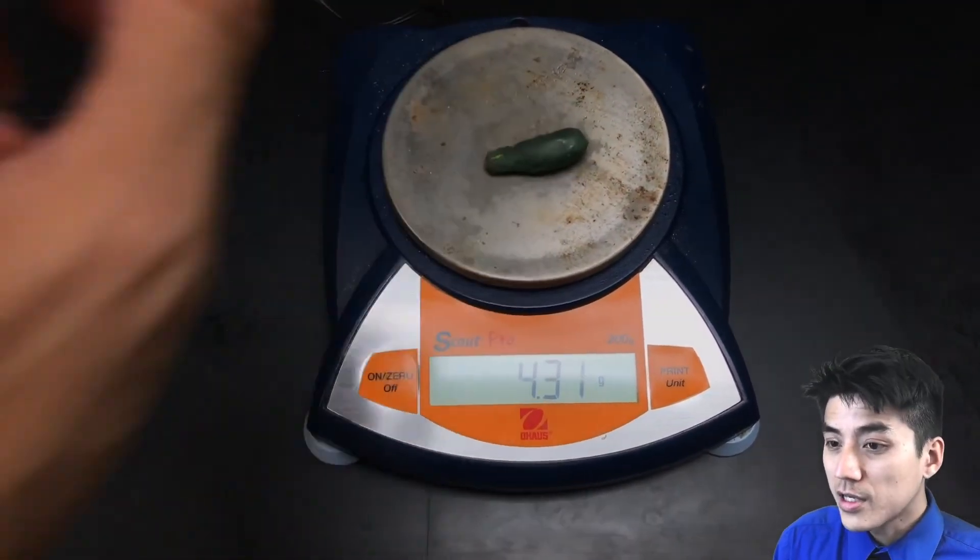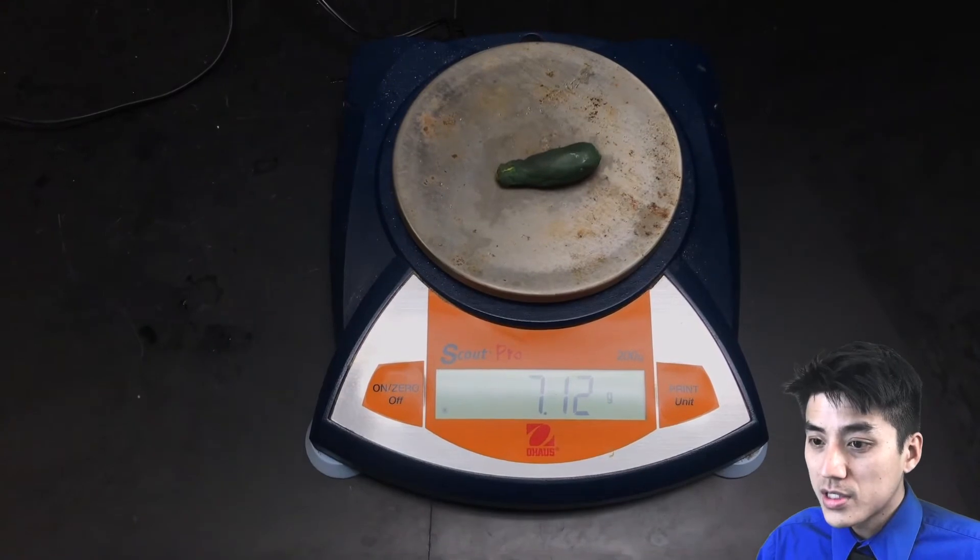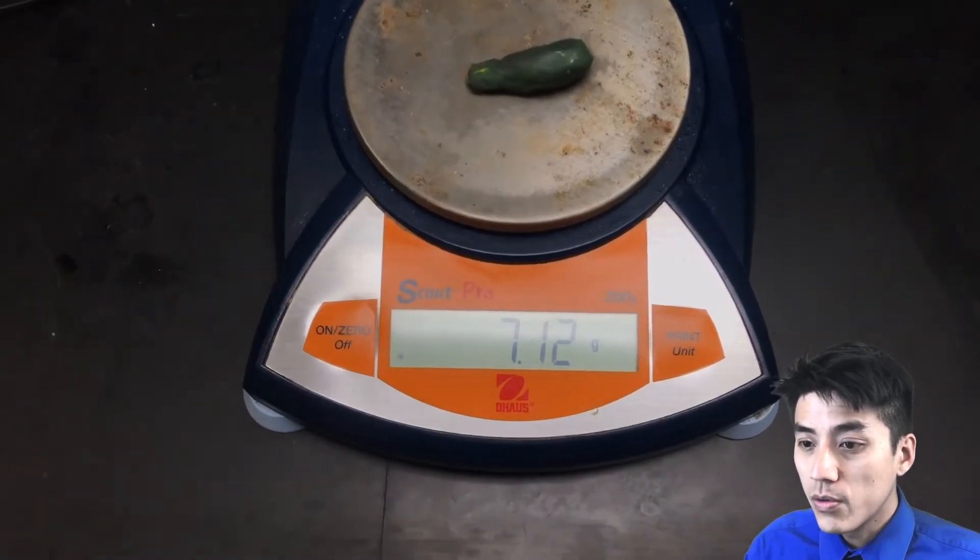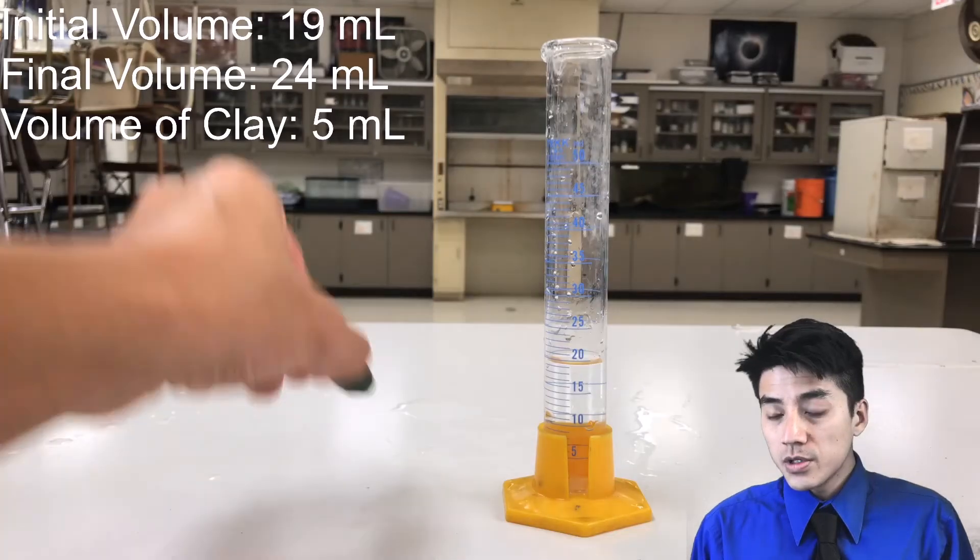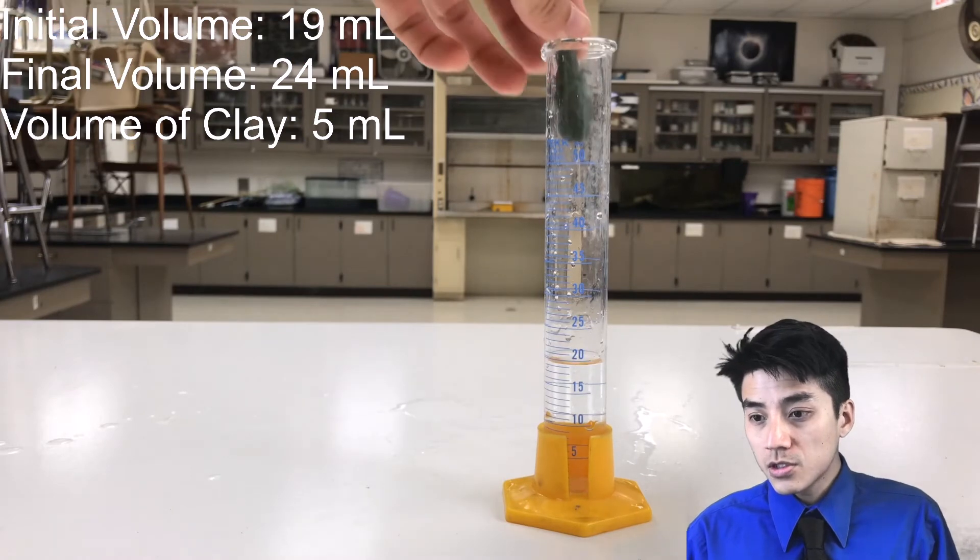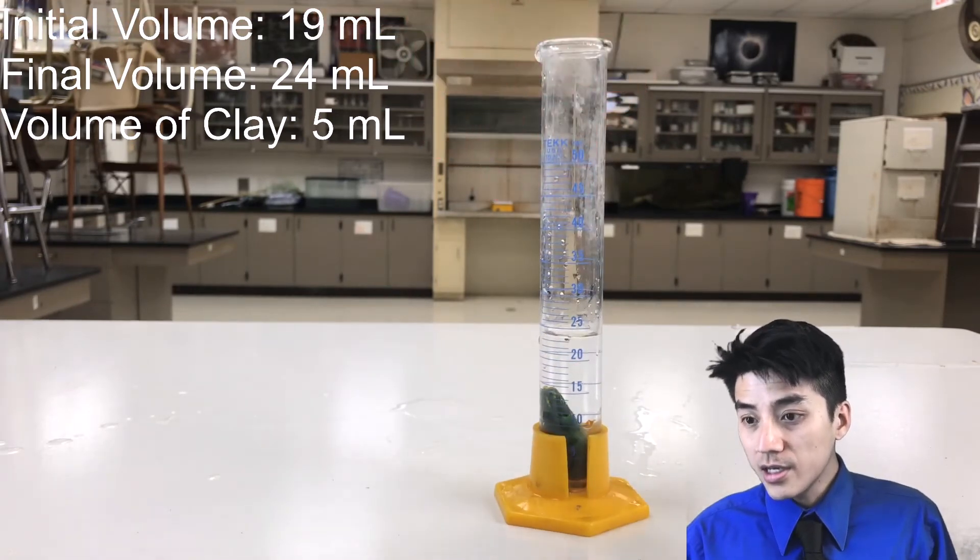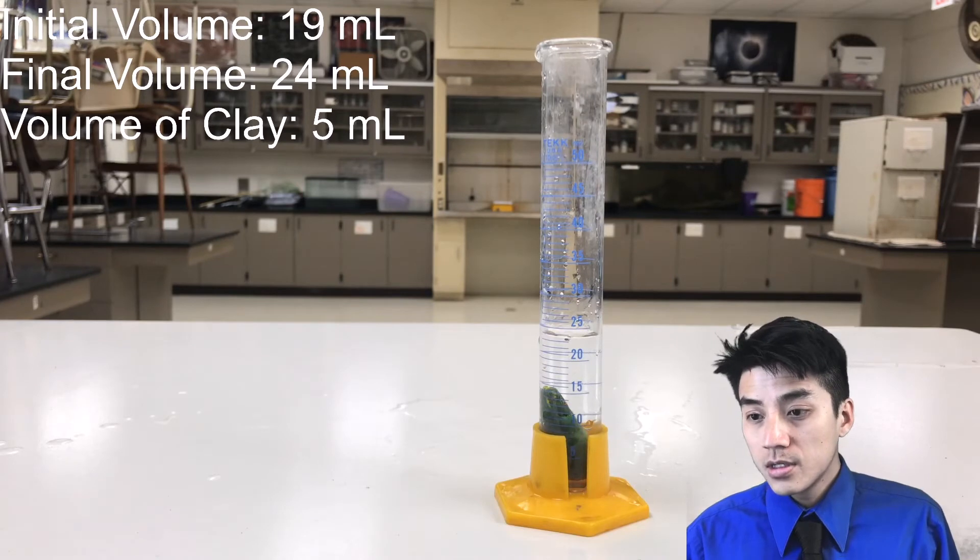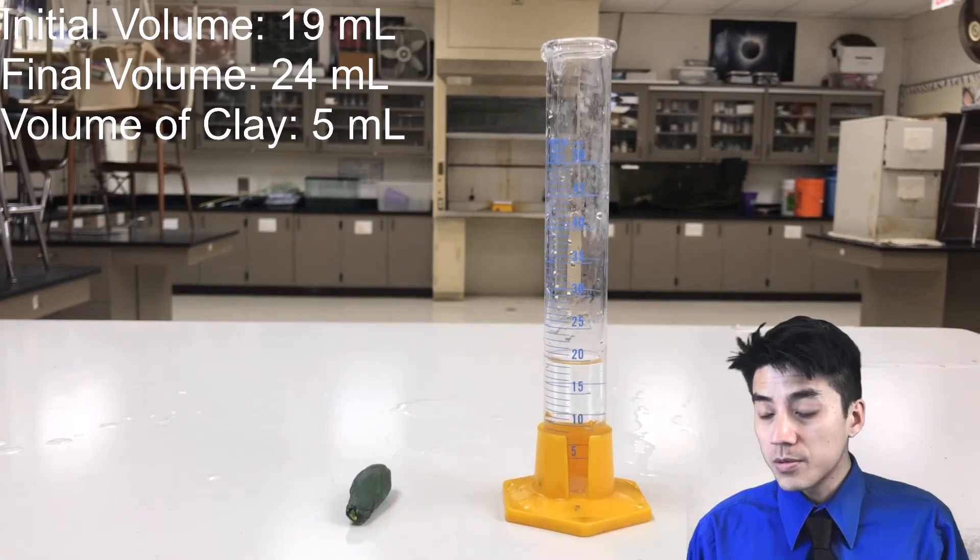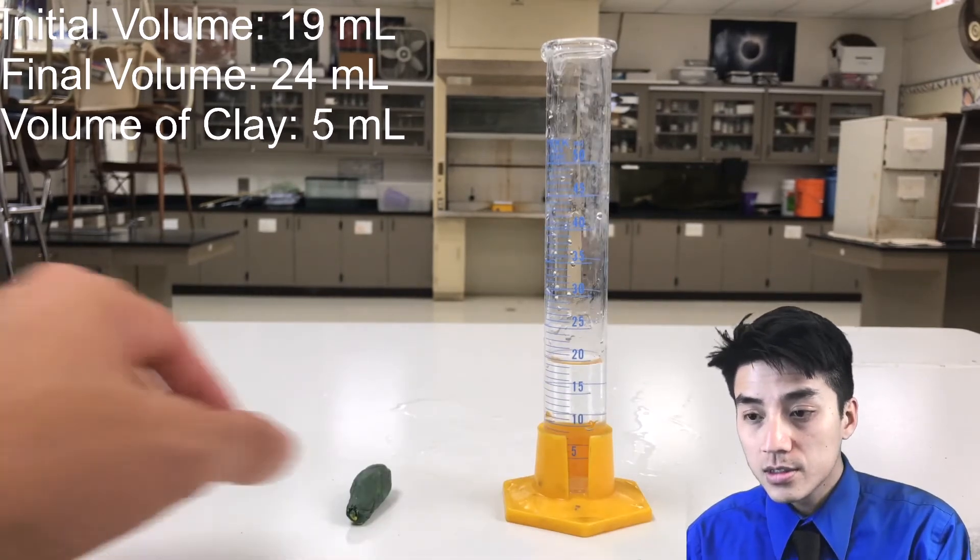So on to our second trial, we're going to take our mass. This is a smaller sample, and it turns out to be 7.12 grams. Once again, we'll use Archimedes' principle. The initial volume of the water is 19. Put the clay in, now it's at 24. You can infer that the volume of the clay is 5 milliliters.